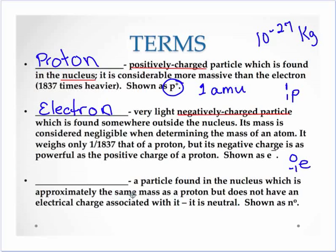And then finally we have our neutral particle, has the same mass, very, very close same mass as a proton, but it is neutral. There's no electric charge associated with it. And that's called the neutron.